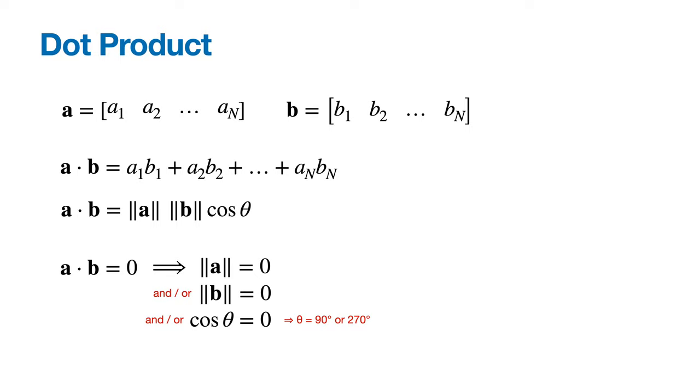So thinking about w dot x equals zero, if you imagine the weight vector pointing out into space somewhere, then the set of vectors x such that w dot x equals zero is the set of all vectors perpendicular to w.